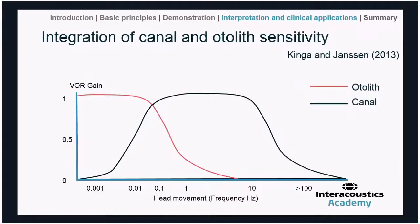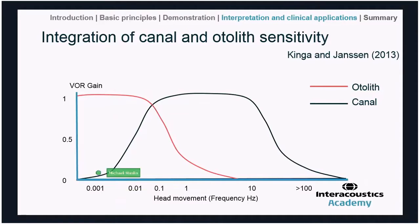Finally, how the linear VOR integrates with the angular canal VOR: on a frequency-versus-gain chart, the linear VOR differs from the angular VOR in that it has a lower frequency sensitivity and a slightly lower cutoff frequency — a low-frequency response compared to the band-pass response of the angular VOR.